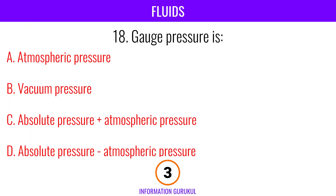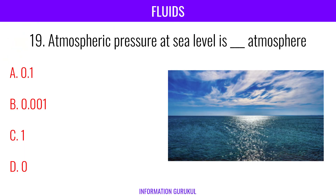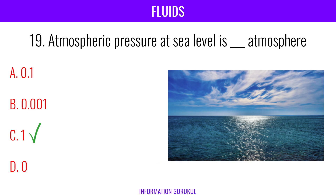Gauge pressure is absolute pressure minus atmospheric pressure. Atmospheric pressure at sea level is 1 atmosphere.